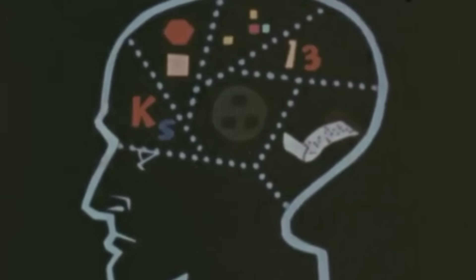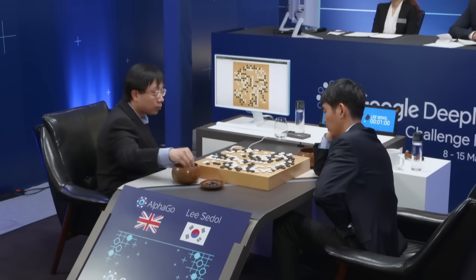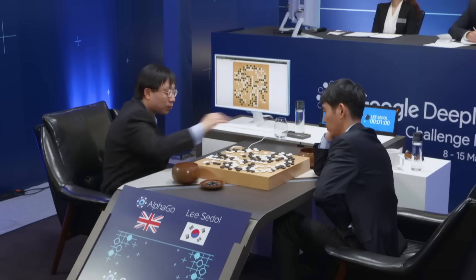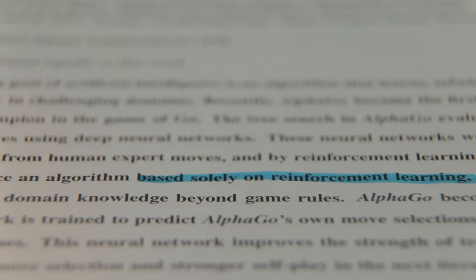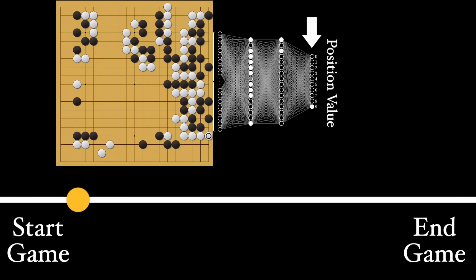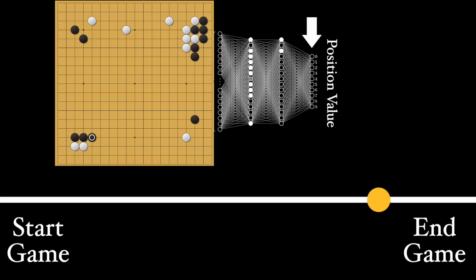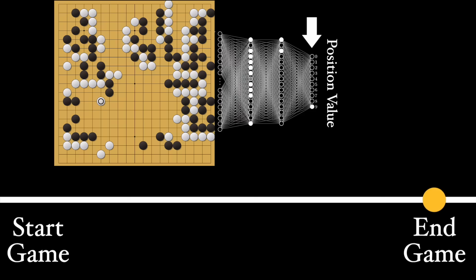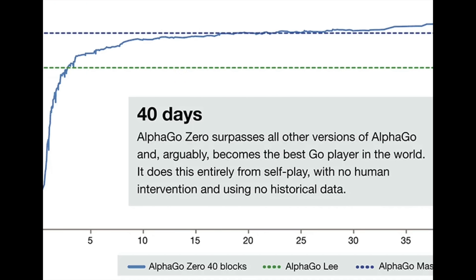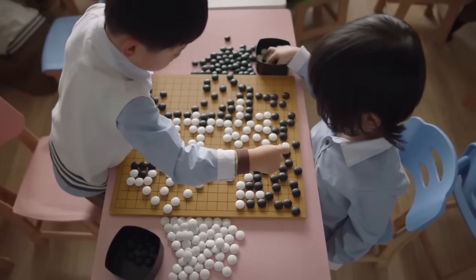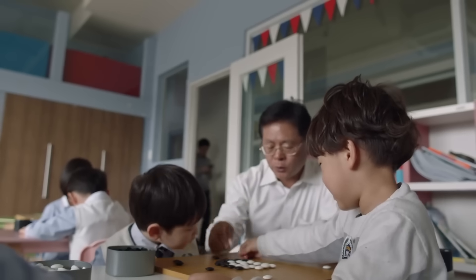In case anyone thought the human games that AlphaGo initially learned from were somehow letting the system cheat, they followed this up with another system which didn't get any human games to learn on, known as AlphaGo Zero. Instead, it began with no knowledge and learned entirely from self-play, learning only from wins and losses. And amazingly, the performance beat AlphaGo. So it turned out that human play, instead of being a crutch, actually hurt its performance, since it limited its exploration of the space of possible gameplay styles.